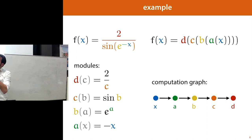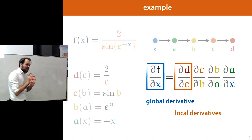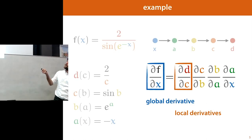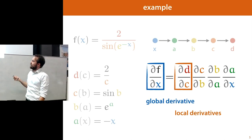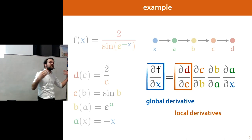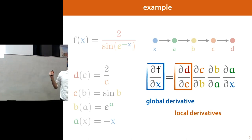Because we've rewritten our function as a sequence of composed smaller functions, we can just apply the chain rule repeatedly to rewrite the derivative. So we start with df/dx, and that splits apart step by step into a product of derivatives by applying the chain rule step by step. We call this the global derivative — the overall function with respect to its parameters — and every one of these factors in the product we call a local derivative.